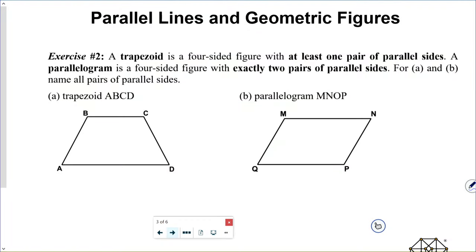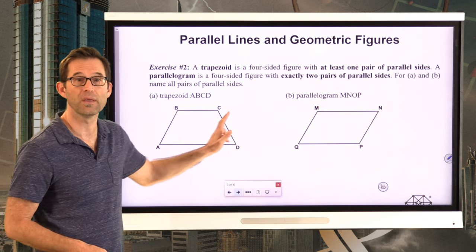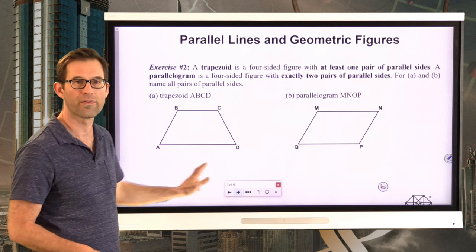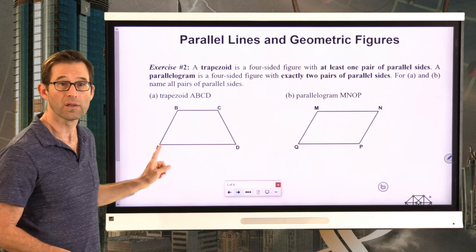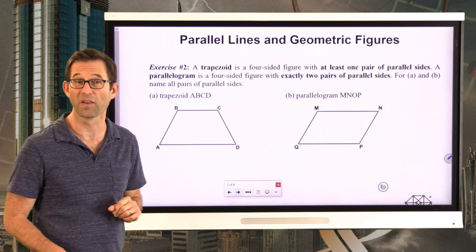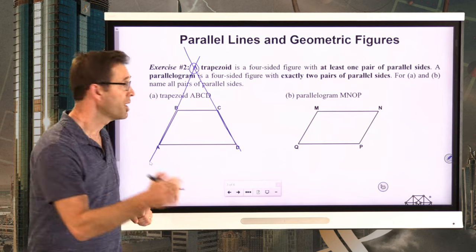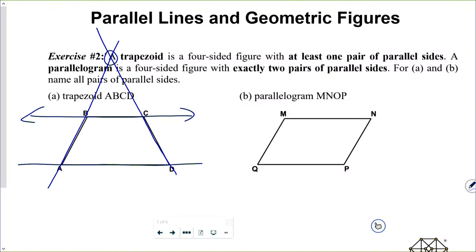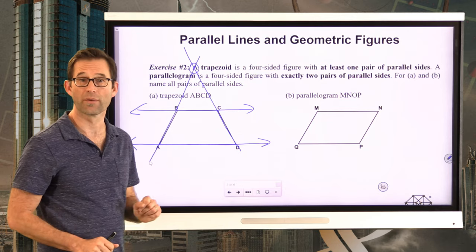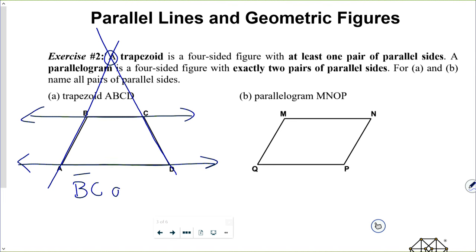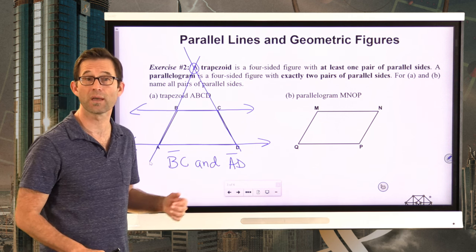A trapezoid is a four-sided figure with at least one pair of parallel sides. A parallelogram, on the other hand, is a four-sided figure with exactly two pairs of parallel sides. For A and B, name all pairs of parallel sides. Let's take a look at the trapezoid together — we've got trapezoid A, B, C, D. Clearly side AB and side CD are not parallel, because if we extended AB and CD they'd eventually intersect somewhere. On the other hand, side BC and side AD are parallel to each other. So BC and AD are parallel sides — notice I put the segment bar above BC and AD because they're segments, not lines or rays.